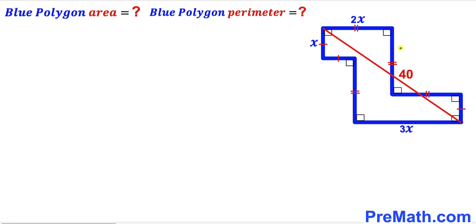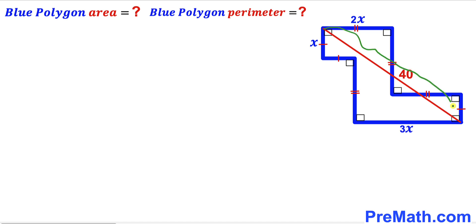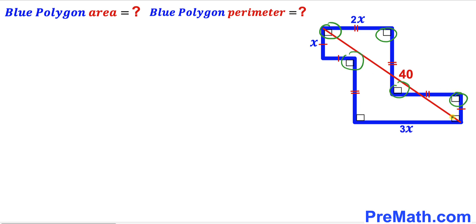Welcome to pre-math. In this video we have a blue polygon where the horizontal sides are 2x and 3x respectively, the vertical side is x, and the distance from one point to another is 40 units. This side, this side, and this side are congruent, and likewise this side, this side, this side, and this side are congruent. All angles are 90 degrees each. Our task is to calculate the area and perimeter of this blue polygon.